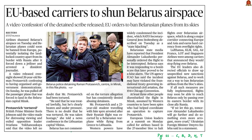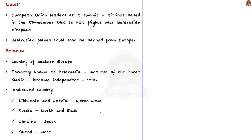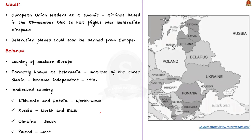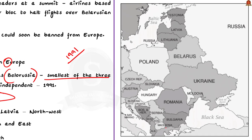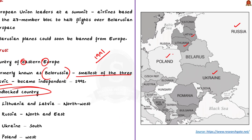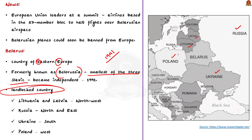Now let us take up this article. Many European Union leaders are calling for airlines to halt flights over Belarusian airspace, and Belarusian planes could soon be banned from Europe, potentially isolating the landlocked country. In this context, let us discuss the geography of Belarus, the UN agency ICAO, and the Chicago Convention. Belarus is a country of Eastern Europe that became independent in 1991. Formerly known as Belorussia or White Russia, it was the smallest of the three Slavic Republics in the Soviet Union. Belarus is a landlocked country, bordered by Lithuania and Latvia to the northwest, Russia to the north and east, Ukraine to the south and Poland to the west. It is roughly one-third the size of Ukraine.